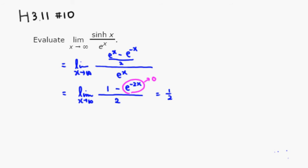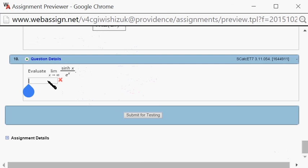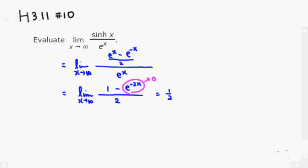Let's type that in. The answer is 1 half. Submit for testing. It came back and looks like we got this one correctly. That's it. I hope that this was clear.